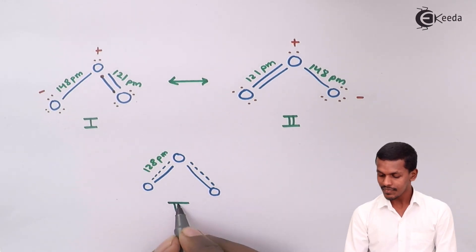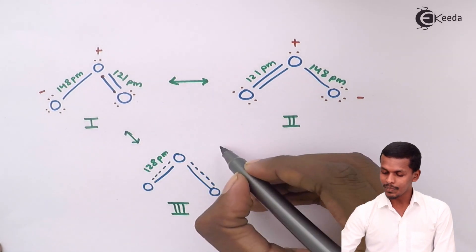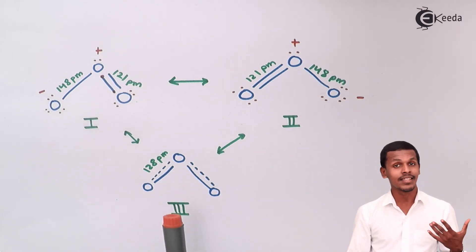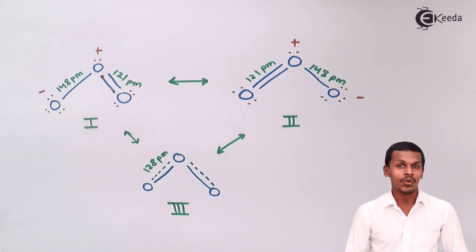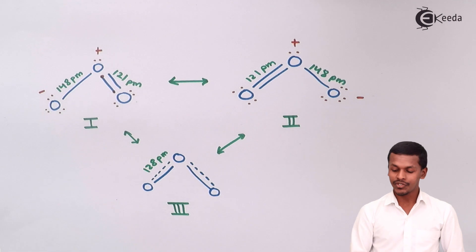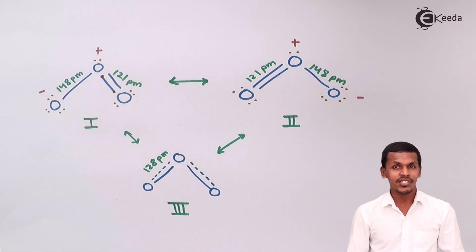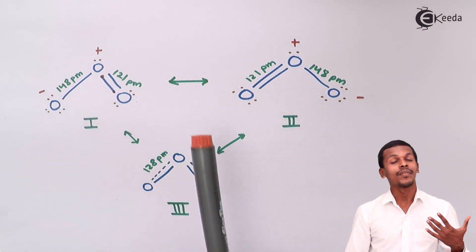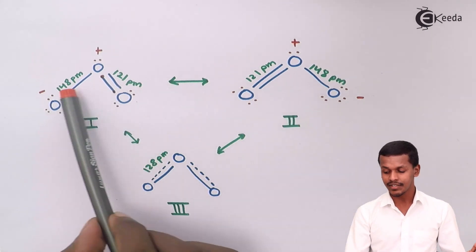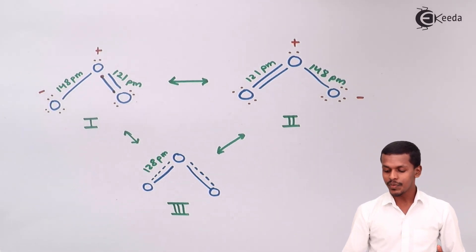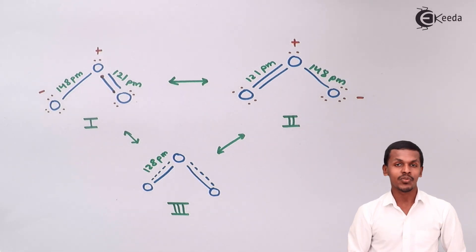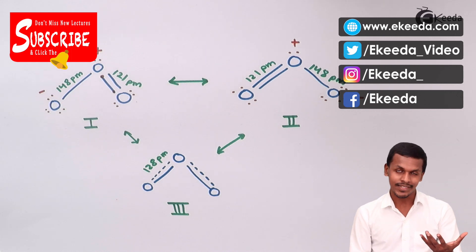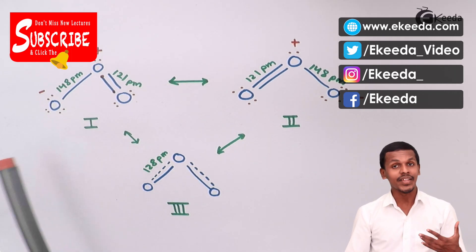This third structure is the most stable one and is called the resonance hybrid. Structures one and two are known as canonical or contributing structures. The resonance energy is the difference in energy between the resonance hybrid and the canonical structures. The resonance hybrid has lower energy, which means it is more stable compared to the canonical structures.